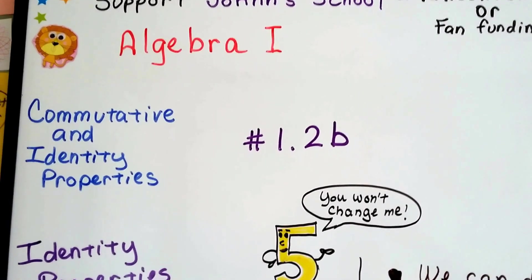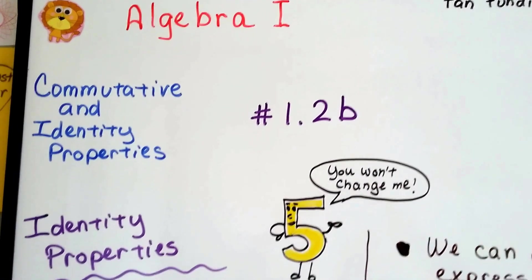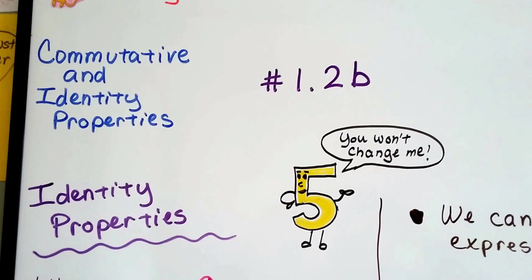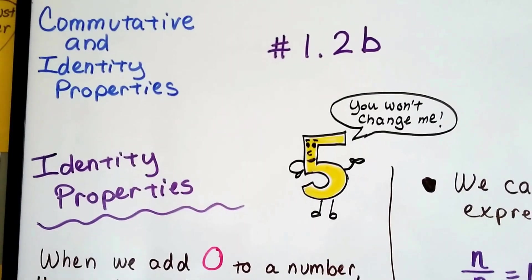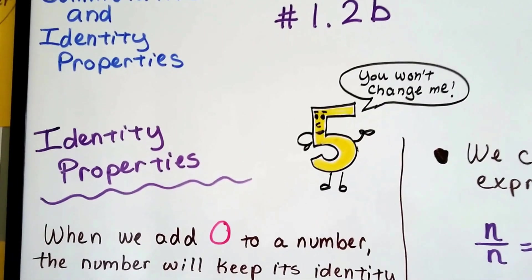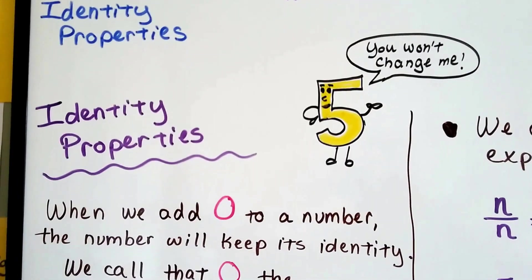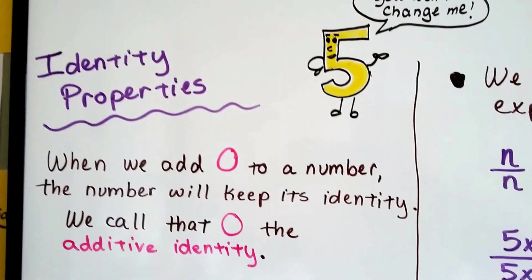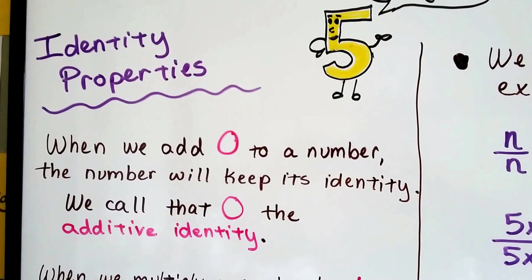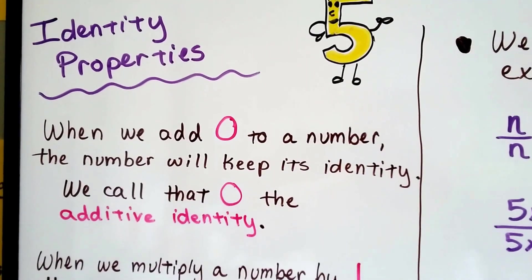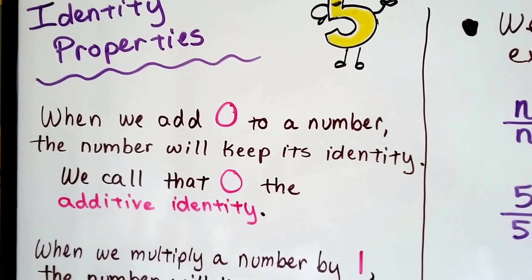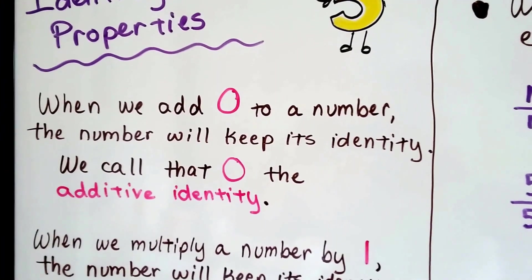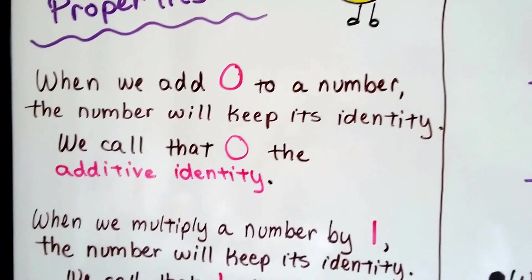Algebra 1, number 1.2b. I'm going to talk about identity properties in this video. When we add zero to a number, the number will keep its identity. We call that zero the additive identity.